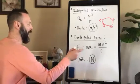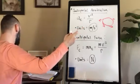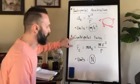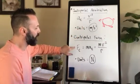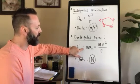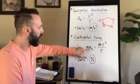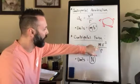If a mass is being accelerated around a circle, that force is called the centripetal force. We label it F subscript c, and it equals the mass times the centripetal acceleration, or mass times v squared over r.